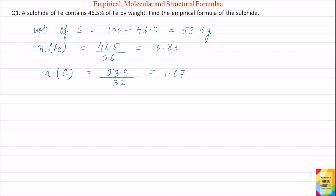Now we know the moles of iron and moles of sulphur. The next step is to find the relative number of moles, or the ratio of moles of iron to moles of sulphur. That is 0.83 divided by 1.67. Simplifying this, it is equal to 1 by 2. So, the number of moles of iron is 1 and the number of moles of sulphur is 2.